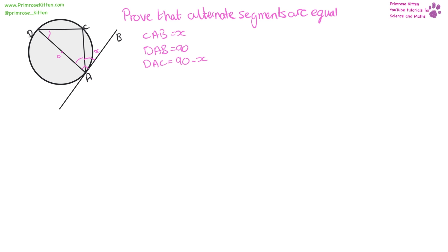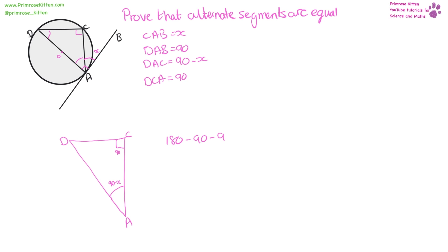We know from another circle theorem that the angle up here at the circumference is a right angle, so the angle D, C, A equals 90. The angles inside a triangle add up to 180, so we have 180 minus 90 minus (90 minus X), which equals the angle at A, D, C. Multiplying out: 180 minus 90 minus 90 plus X, and 180 minus 90 minus 90 is zero, leaving us with X equals A, D, C. So the angle up here is X, which is the same as the angle down here, X.